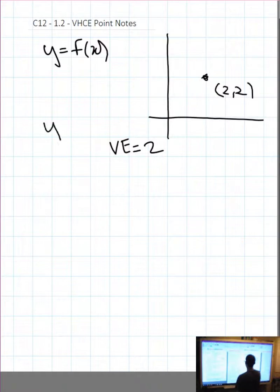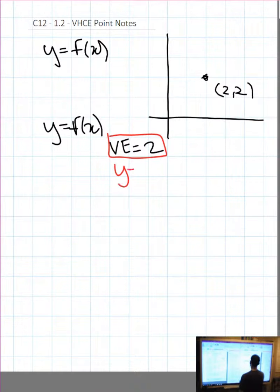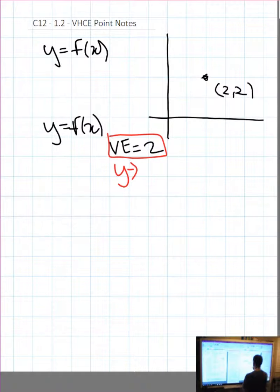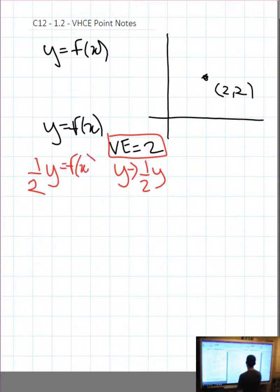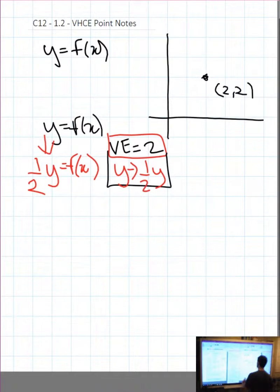So I'll take my function y equals f of x, and I want to do a vertical expansion by 2. I know I want to substitute the opposite operation for the variable, and the opposite operation for an expansion of 2 is substituting 1/2 y in for y. So I'm going to put 1/2 y in for y, and that will do a vertical expansion of 2.